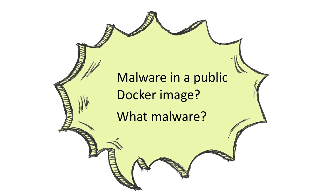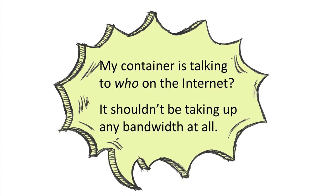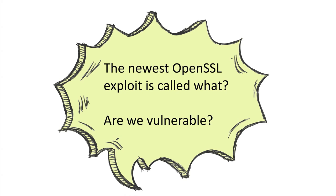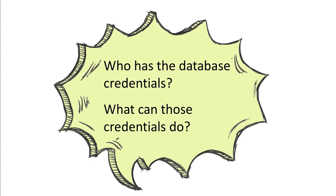Or you have a container out there doing what? It shouldn't be talking to anybody — I don't understand why it's got 100 megs of bandwidth; what the hell is going on? Or the newest OpenSSL exploit is out — Heartbleed — and now I have to worry: are we vulnerable to it? These are all things you don't know because you don't have this stuff in place. Or people come to you and say 'hey, what version of Java were we running? Really? We're running something that old? Or really, we've already moved to the new one? I had no idea.' Or: what about the database credentials — who has them, what can they do? Who knows?